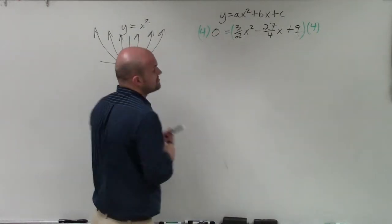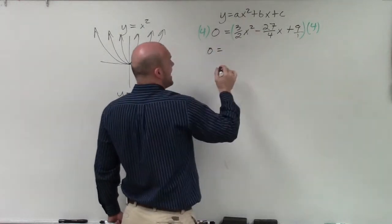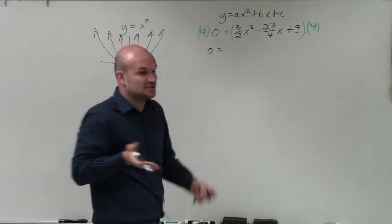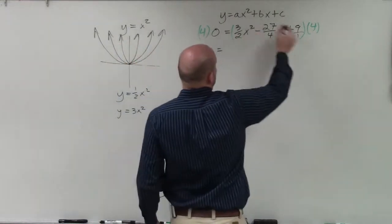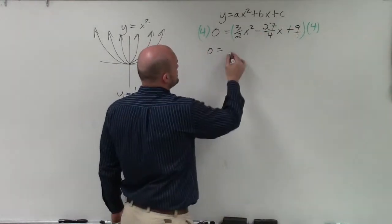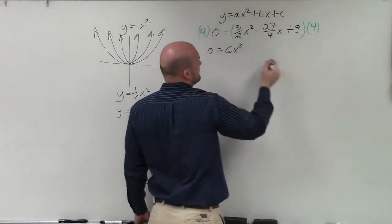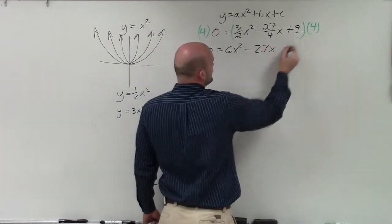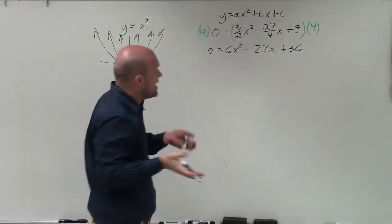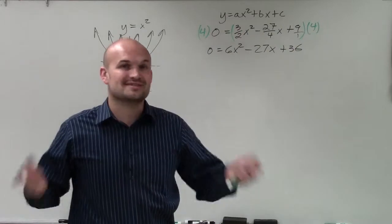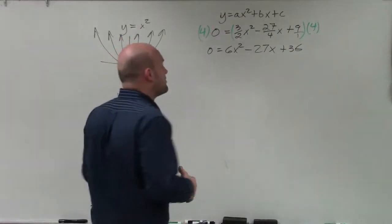Well, obviously, 4 times 0 is just going to be 0. So I have 0 equals 4 times 3 halves. Well, you could do it a couple of different ways. You could multiply the 4 times 3, which would be 12, then divide it by 2, which is 6. Or you could just divide the 2 into the 4, which is 2. 2 times 3 is 6x squared. Here, my 4s are going to divide out. So I'll have minus 27x. And then 4 times 9 is going to be a positive 36. So now I have a quadratic that's in standard form with no fractions. Much better than trying to do all these operations with fractions.